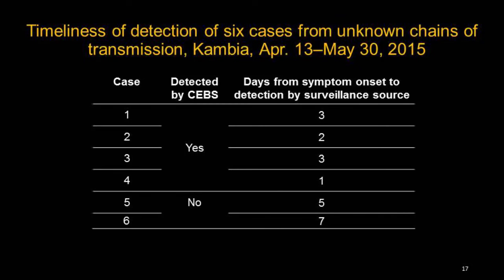This chart demonstrates the timeliness of case detection for six cases from unknown chains of transmission in Cambia, which was the culmination of the field investigations. Six of the 13 confirmed cases had not appeared on any contact list or been under contact tracing. Community event-based surveillance detected four of these six cases fairly quickly, within a range of one to three days from date of symptom onset. The other two cases, not detected by community event-based surveillance, took five and seven days each. However, these data are too small to draw a meaningful conclusion on timeliness.